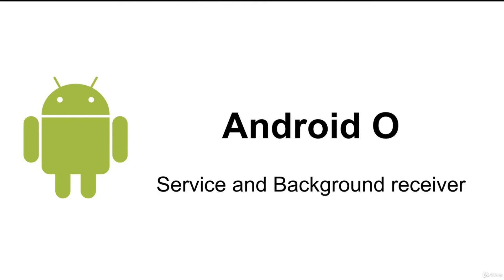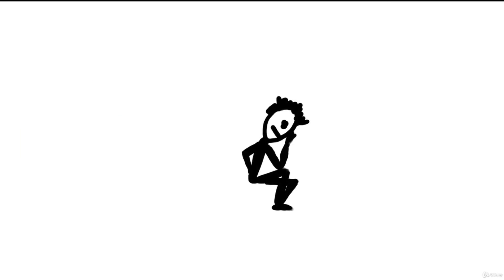Both services and broadcast receivers have some changes in Android O compared to previous versions, and I will show you what those changes are. You need to know these changes because you need your application to support Android O, but sometimes you also need to support previous versions — for example, Android O currently has only about 1% of the market while Lollipop still has more than 70%. Your goal is to target as many users as possible, so you need to support both.